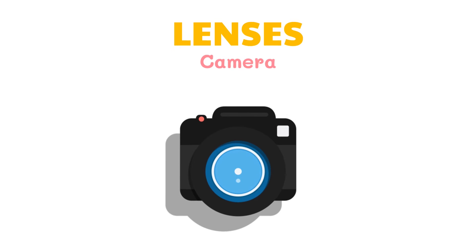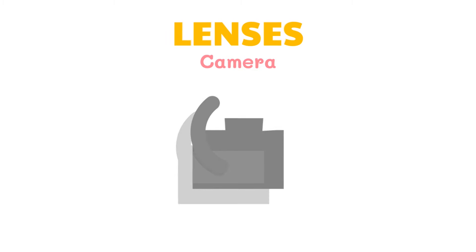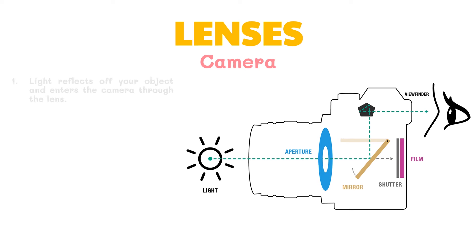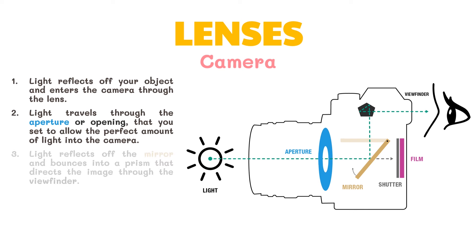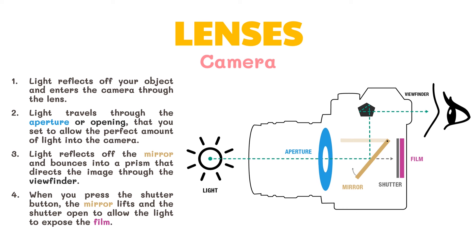A camera lens is one of the most familiar types of lenses you encounter on a daily basis, and these come in many different types, although they all share the same basic principles of operation. This is the mechanism for traditional film cameras. First, light reflects off your object and enters the camera through the lens. Next, the light travels through the aperture or opening that you set to allow the perfect amount of light into the camera. Then, light reflects off the mirror and bounces into a prism that directs the image through the viewfinder. When you press the shutter button, the mirror lifts and the shutter opens to allow the light to expose the film.